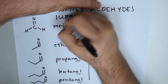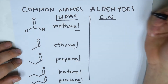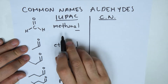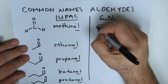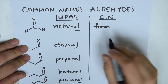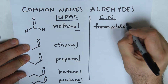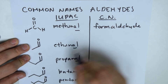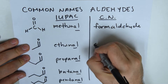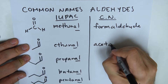Now I'm going to write up here the common names, from their original nomenclature. The 'meth' prefix is going to be substituted by the word 'form' — and adding 'aldehyde' gives us formaldehyde. The 'eth' prefix for number two is substituted for 'acet', so this becomes acetaldehyde.